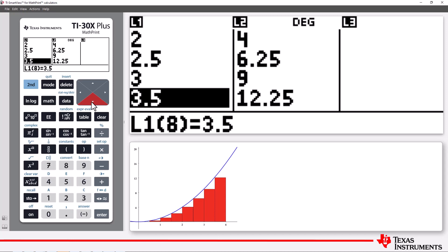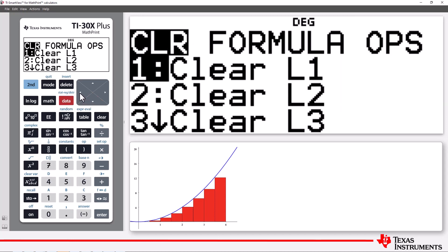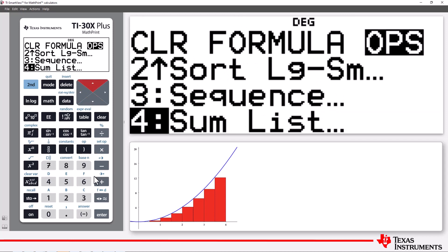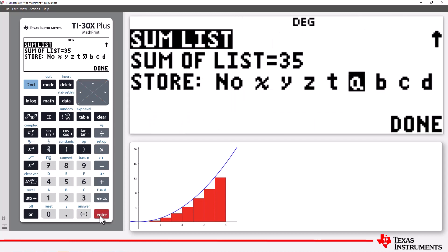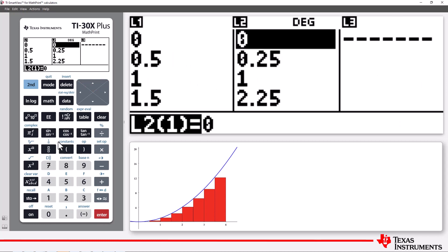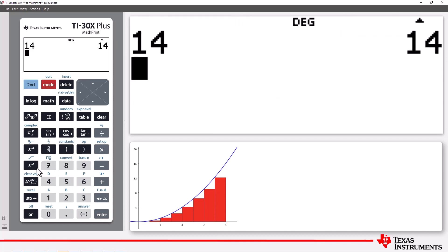So again, we can simply sum the values in list 2. But this time, we need to remember that each column is only half a unit wide, so I need to multiply the sum by one-half. So the approximate area is 17.5.